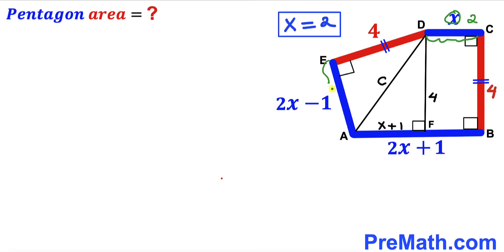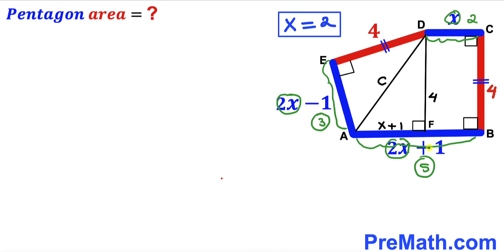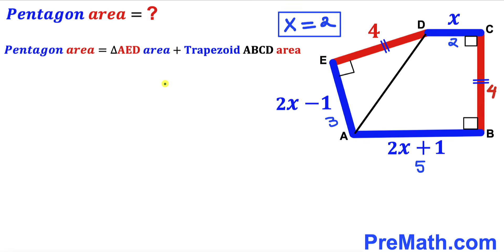With x = 2: segment AE = 2(2) − 1 = 3 units, and segment AB = 2(2) + 1 = 5 units.